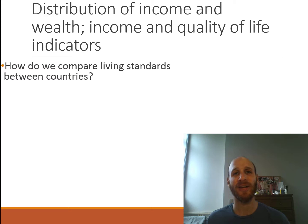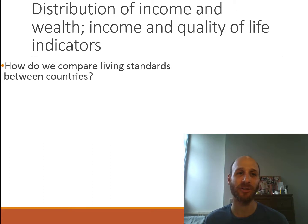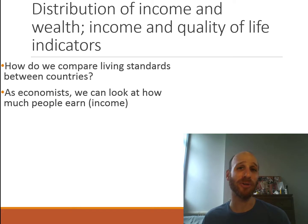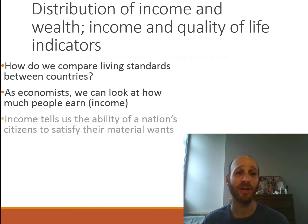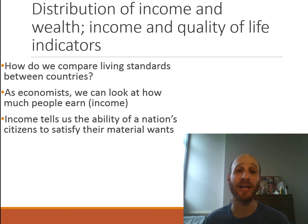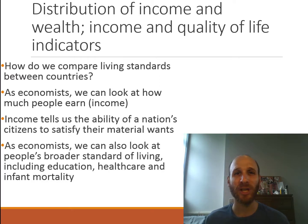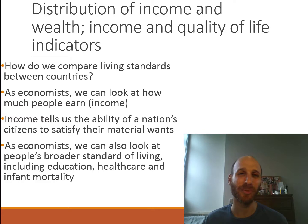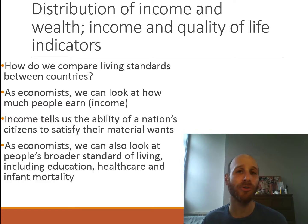The first thing to think about is that this syllabus dot point is all about how do we compare living standards between countries. As economists, we can look at how much people earn — this tells us very clearly the differences between people's lives. Income tells us the ability of a citizen to satisfy their material wants: they're able to buy a new car, new clothes, pay for private schools, all sorts of things that tell us about their quality of life. But as economists, we can also look beyond just what people earn — we can look at their overall standard of living, such as their educational attainment, the health care they can access, infant mortality rates, and other broader measures.